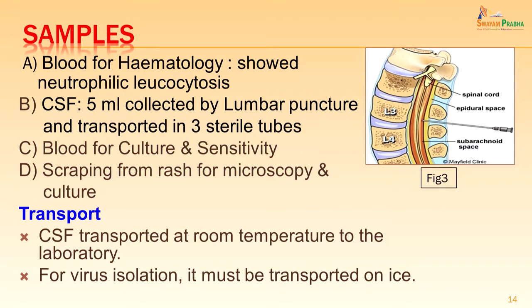Blood for hematology was sent and showed neutrophilic leukocytosis. CSF was collected by lumbar puncture accessing the subarachnoid space between the L3 and L4 vertebrae; 5 ml of CSF was collected. Blood was also collected for culture and sensitivity, and a scraping from the rash was collected for microscopy and culture. The CSF was transported at room temperature, as only for virus isolation must it be transported on ice.